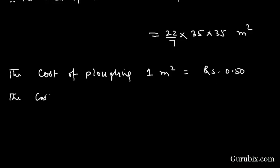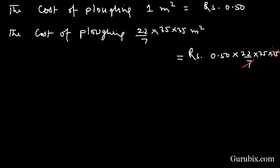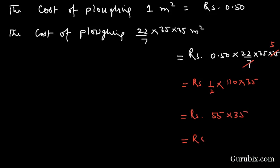The cost of plowing is 22 over 7 multiplied by 35 times 35, multiplied by 0.50. Dividing 35 by 7 gives 5, so the expression becomes one-half times 22 times 5 times 35, which equals 55 times 35, giving rupees 1925. So rupees 1925 is the cost of plowing the field.